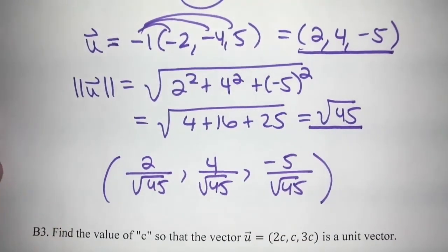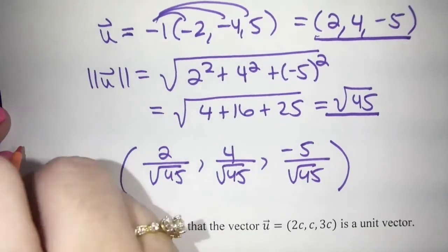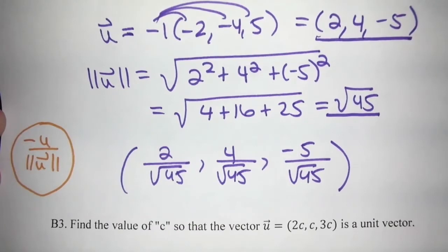And if you're a person who really likes formulas, then the formula you could use to calculate this would be negative U over magnitude of U. Because that would be switching the sign first to get opposite direction, and then dividing by its magnitude when you're done.